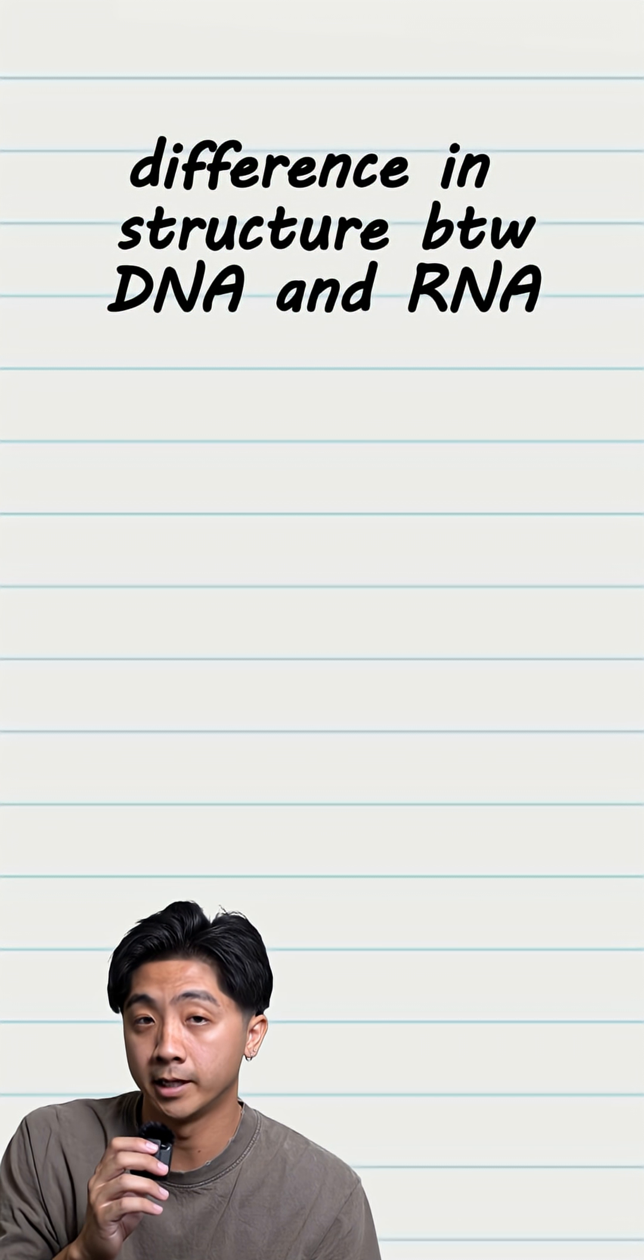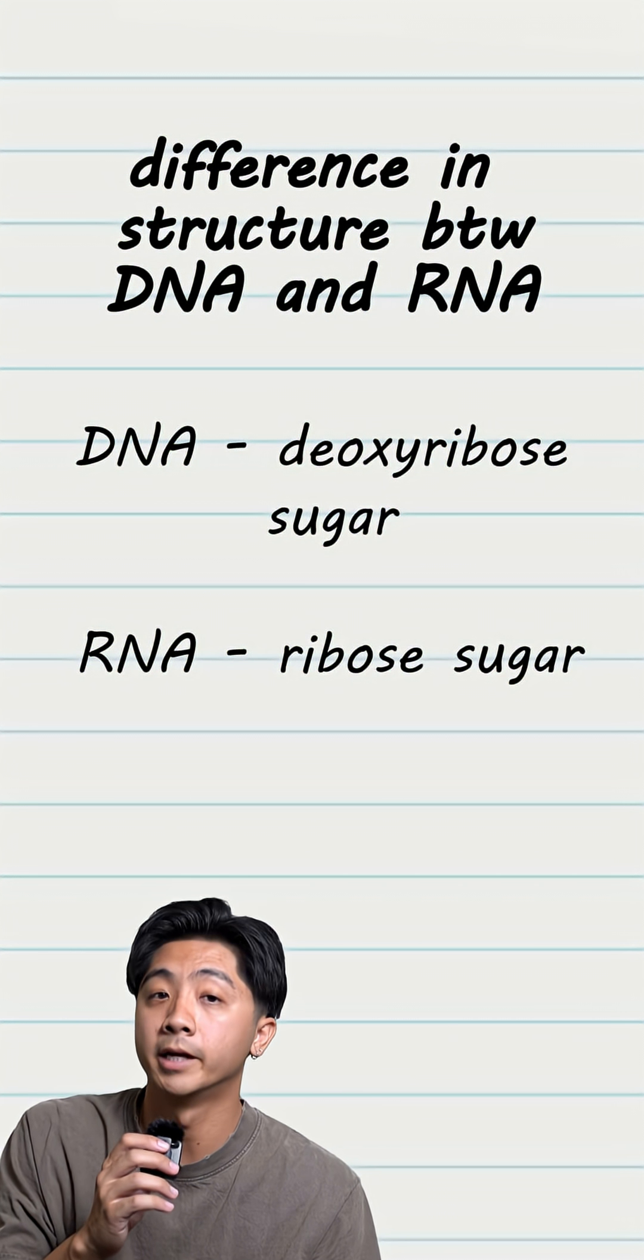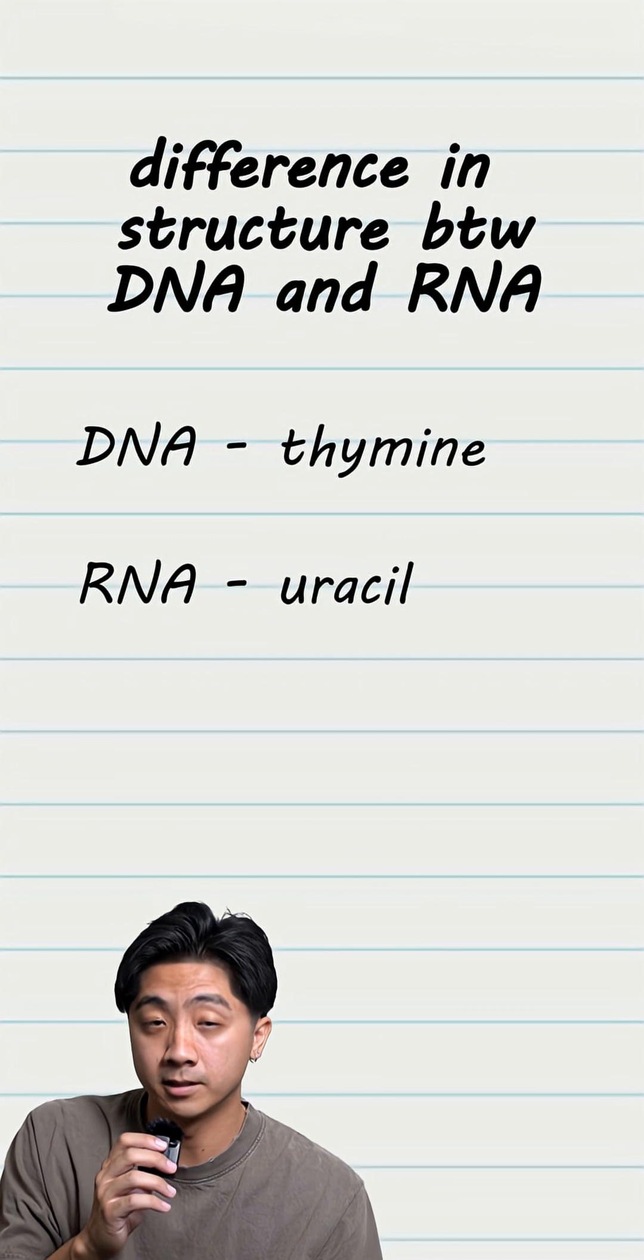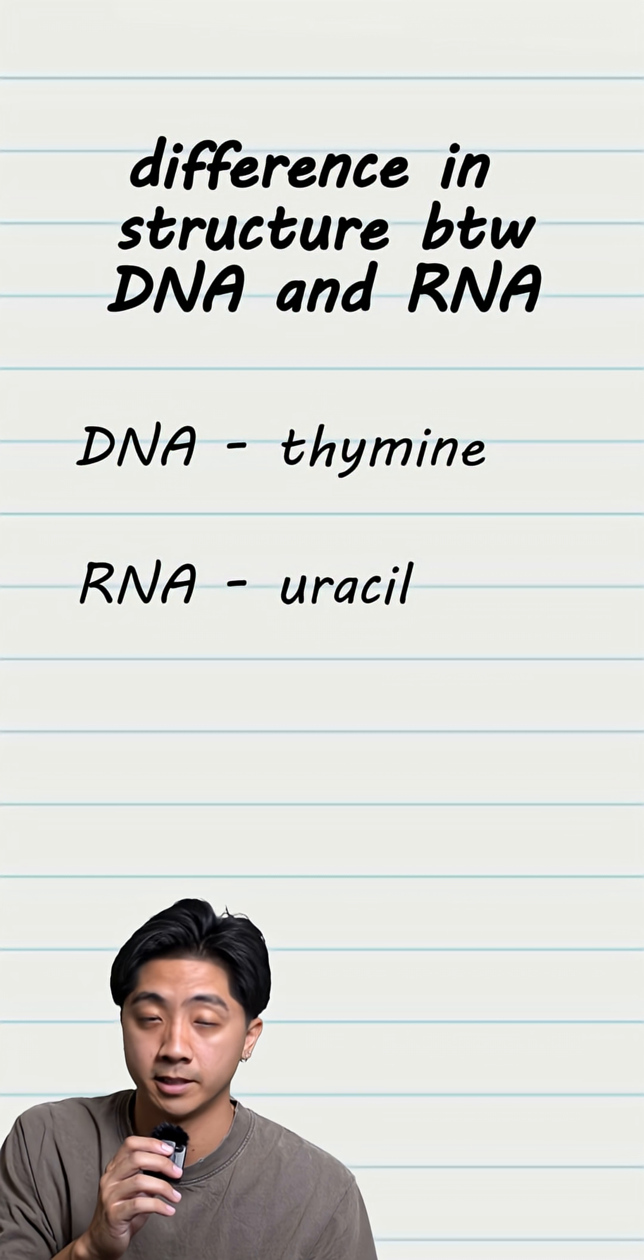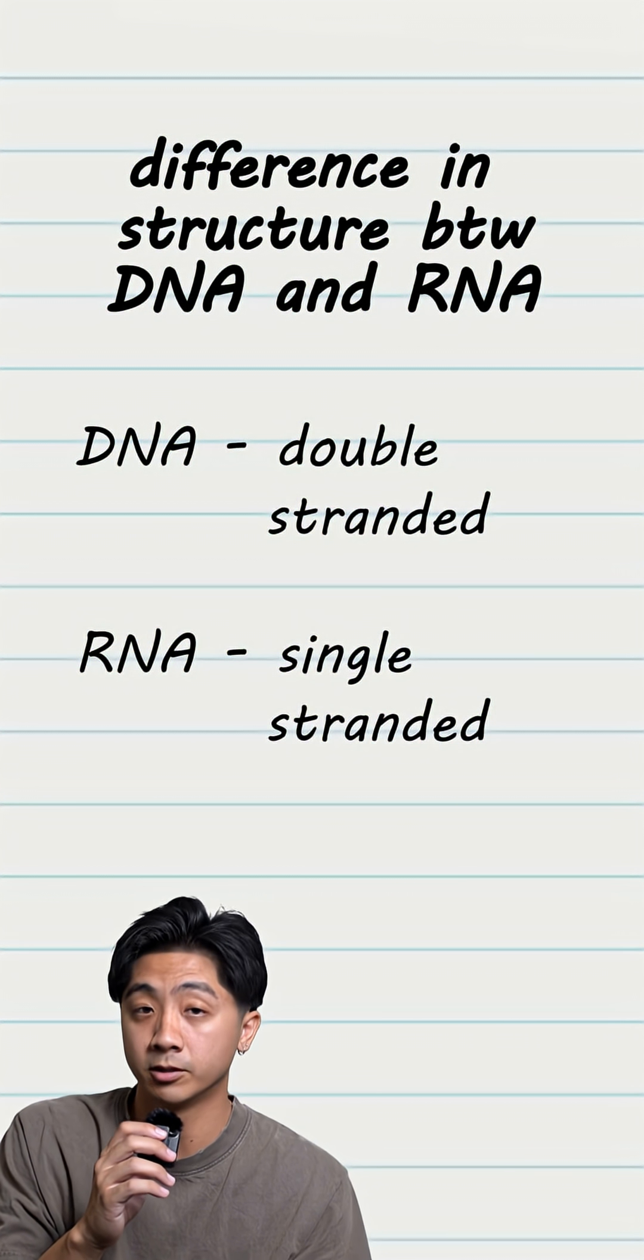The structural differences between RNA and DNA include DNA has a deoxyribose sugar, while RNA has a ribose sugar. DNA contains thymine, while RNA contains uracil. DNA is usually double-stranded, while RNA is usually single-stranded.